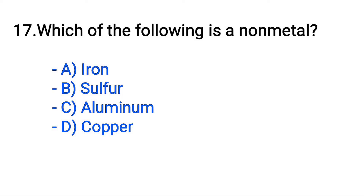Question number 17. Which of the following is a nonmetal? Option A: Iron. B: Sulphur. C: Aluminium. D: Copper. The correct answer is option B, Sulphur.